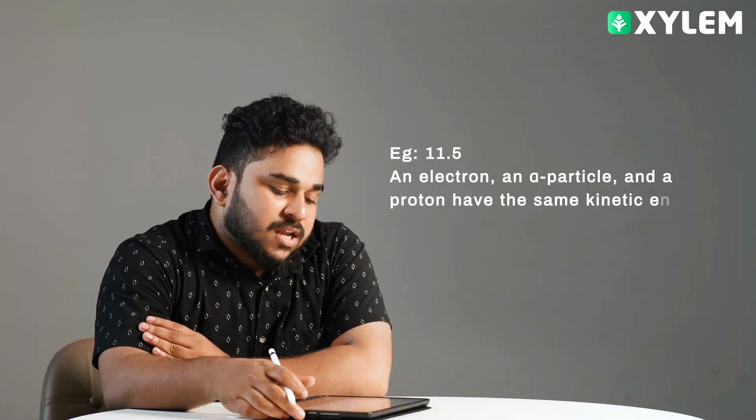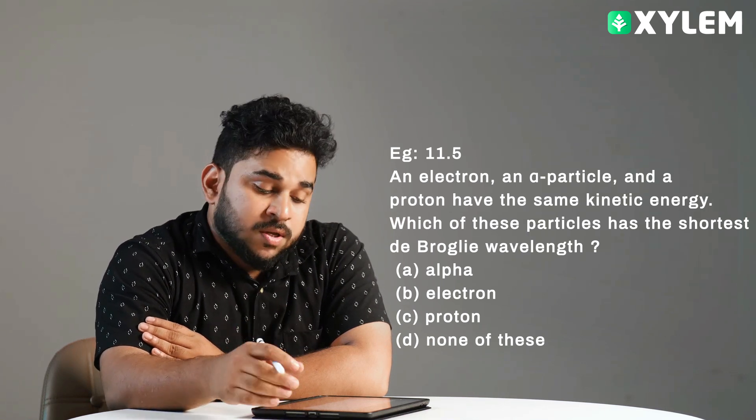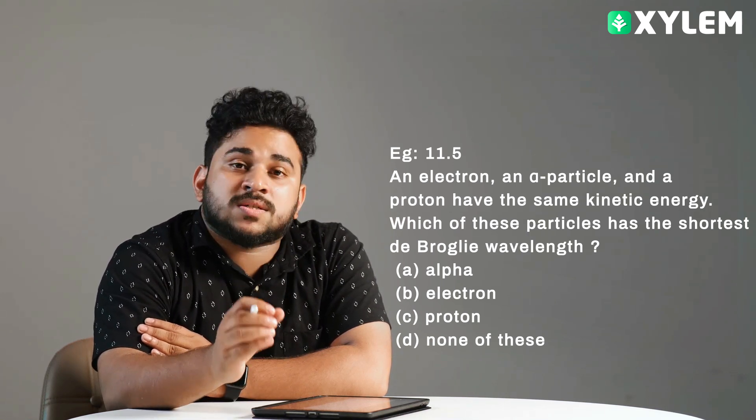Moving to next question, example 11.5. An electron, an alpha particle, and a proton have the same kinetic energy. Which of these particles has the shortest de Broglie wavelength?